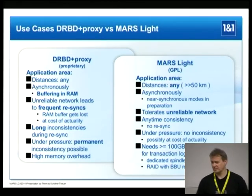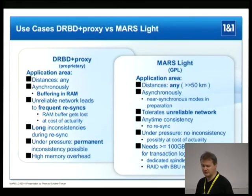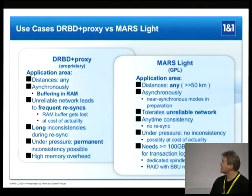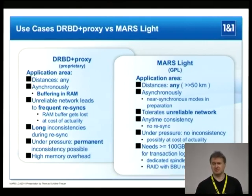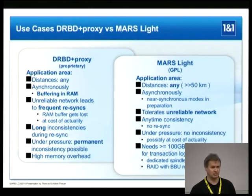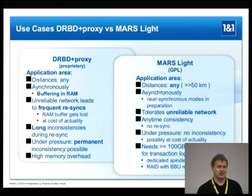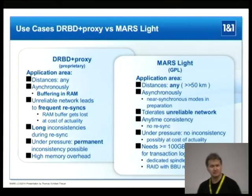For the second use case, you can buy a proprietary addition called proxy from Linbit, the maker of DRBD, which allows replication over long distances. But the main drawback is buffering in RAM — the buffer is not on a file system or on stable storage. If this RAM buffer gets lost due to a network problem, the buffer is killed and you have to re-sync all the lost data. This re-sync operation is out of order — it's not in the original order of operations.